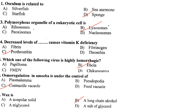The polymorphous organelle of a eukaryotic cell is the lysosome. Lysosomes are polymorphic as they are present in more than one form inside the cell. There are four types: primary lysosome (newly formed, containing enzymes from rough ER), secondary lysosome (formed by fusion with phagosomes), autophagosomes (formed by digestion of intracellular organelles), and residual bodies (containing undigested material expelled by exocytosis).